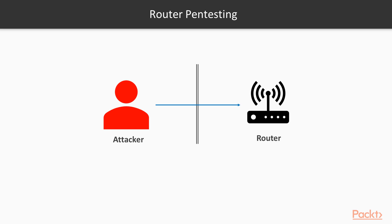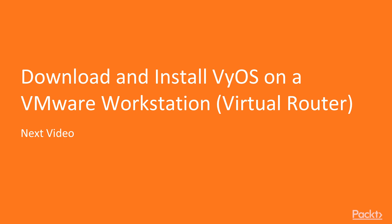This can be done by any external attacker. The work of network engineers or ethical hackers is to secure their router by putting complex passwords on the services and hardening the security inside the router. The attacker's goal is to access all these services inside the router. This is all about router pentesting. In the next video, I am going to show you how you can download and install Vios, which is a virtual router in VMware Workstation.